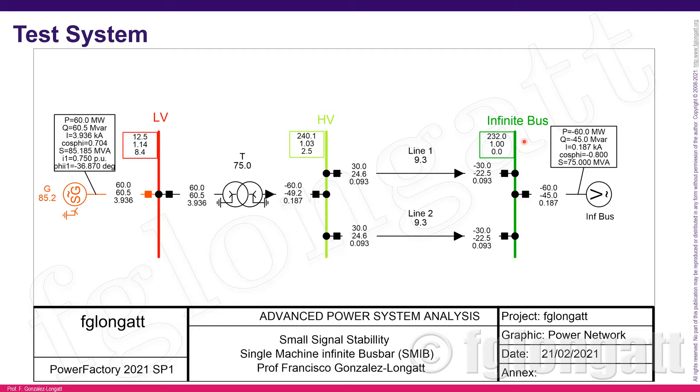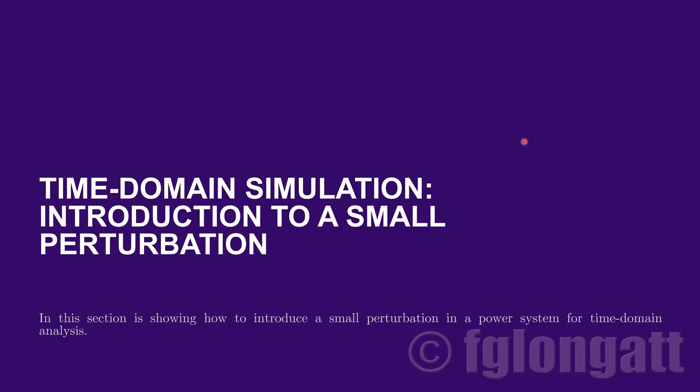We want to assess small signal stability. We are using the classical model for the synchronous machine — a constant voltage source behind an impedance. There is no dynamic performance related to electrical components; only mechanical dynamic behavior is modeled. The equation of motion inside the PowerFactory technical reference describes this.